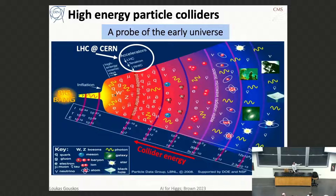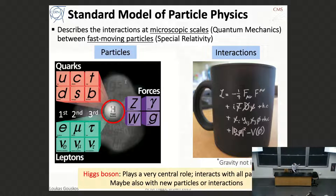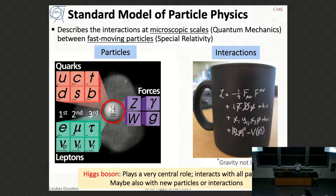To set the scene, one of the best tools we have to probe the early universe is high-energy particle colliders. By colliding particles, we are recreating the conditions that existed very early after the Big Bang. The higher the collision energy, the closer we go to the beginning of the universe. Currently, we are probing the region which corresponds to something like 10 to the minus 10 to 10 to the minus 12 seconds after the Big Bang.